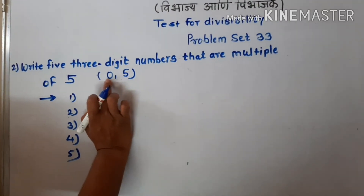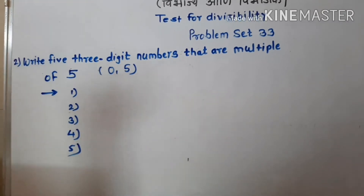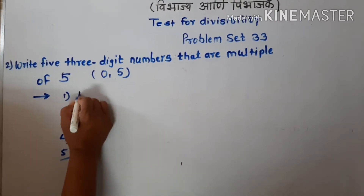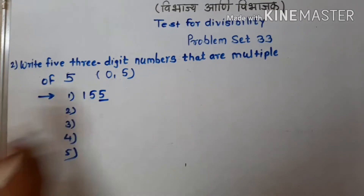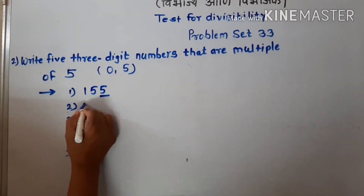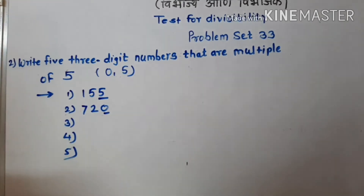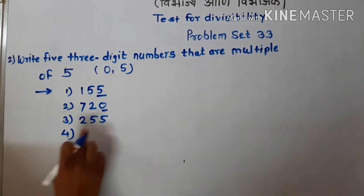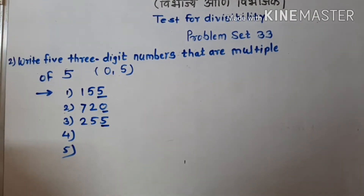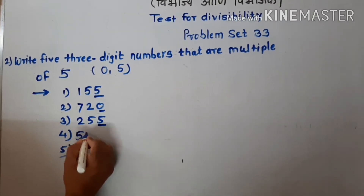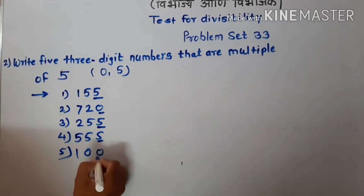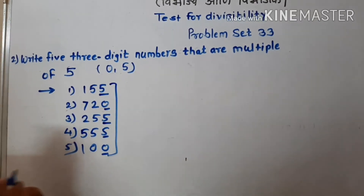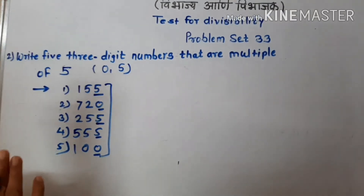The unit place of our number should have either 0 or 5. The numbers we write are: 155 — unit place has 5. Second number: 720 — unit place has 0. Then 255 — unit place has 5. Then 555 and 100 — unit place is 0. Students, remember: only 0 and 5 in the unit place make a number a multiple of 5.